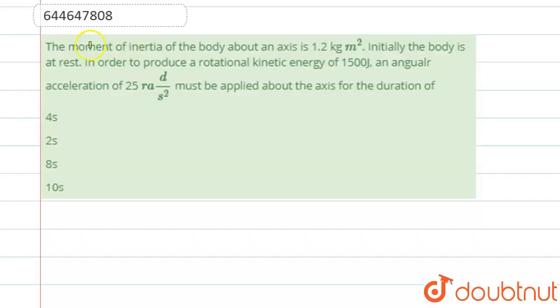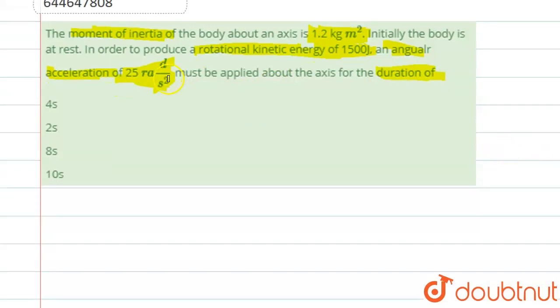Hello students, now we are going to see this question. The question says that the moment of inertia of a body about its axis is 1.2 kilogram meter square. Initially the body is at rest. In order to produce the rotational kinetic energy of 1500 joules, an angular acceleration of 25 radians per second square must be applied about the axis for the duration of what. So we need to find the time for which this angular acceleration must be applied.